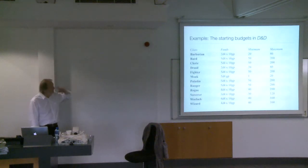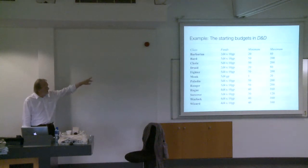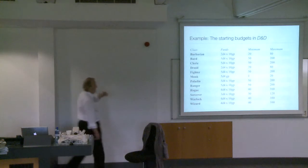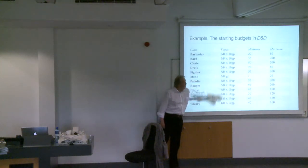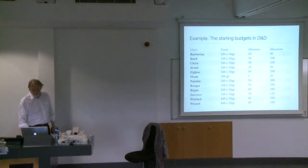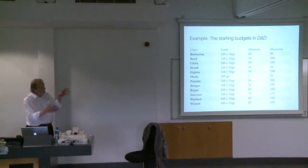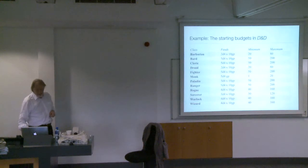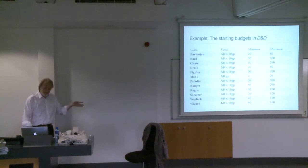In D&D, each character has a starting fund partly determined randomly by rolling a four-sided die and multiplying by ten — except in the case of the poor old monk, who can end up with a minimum of one and a maximum of twenty gold pieces. That gives you an idea of a game trying to emulate the differences in what characters have as they set out in life.